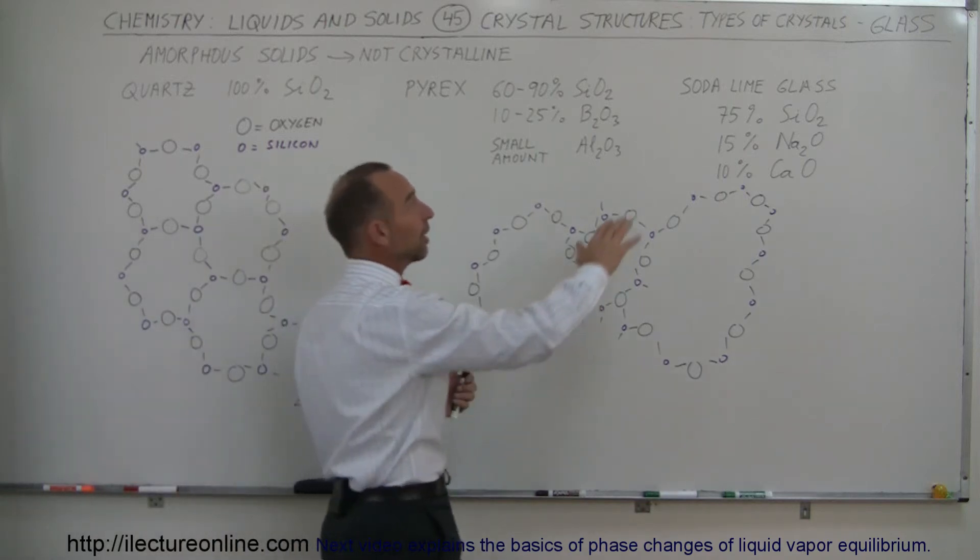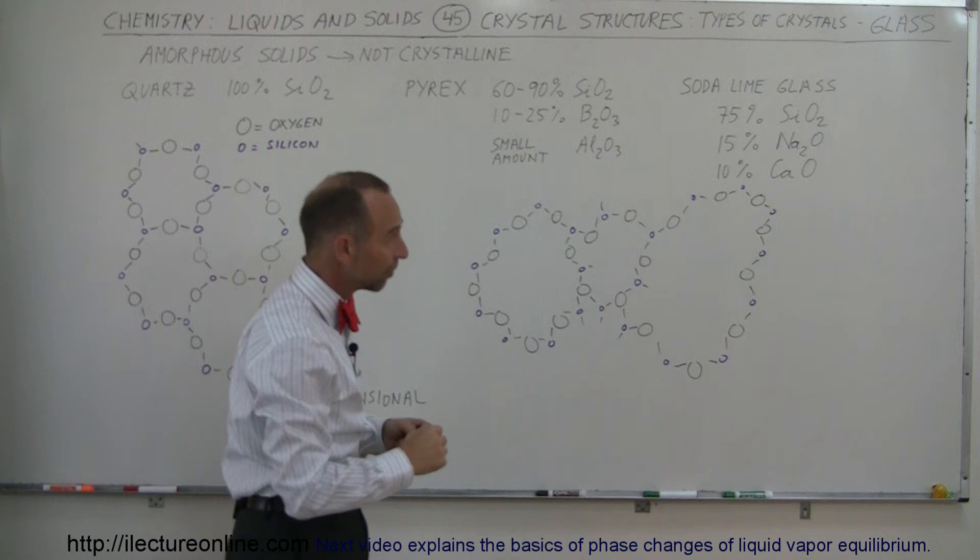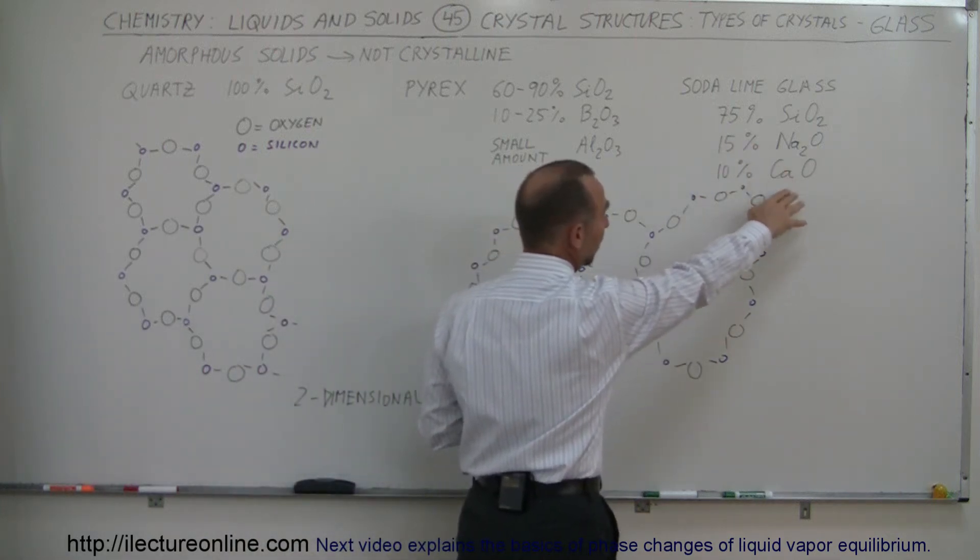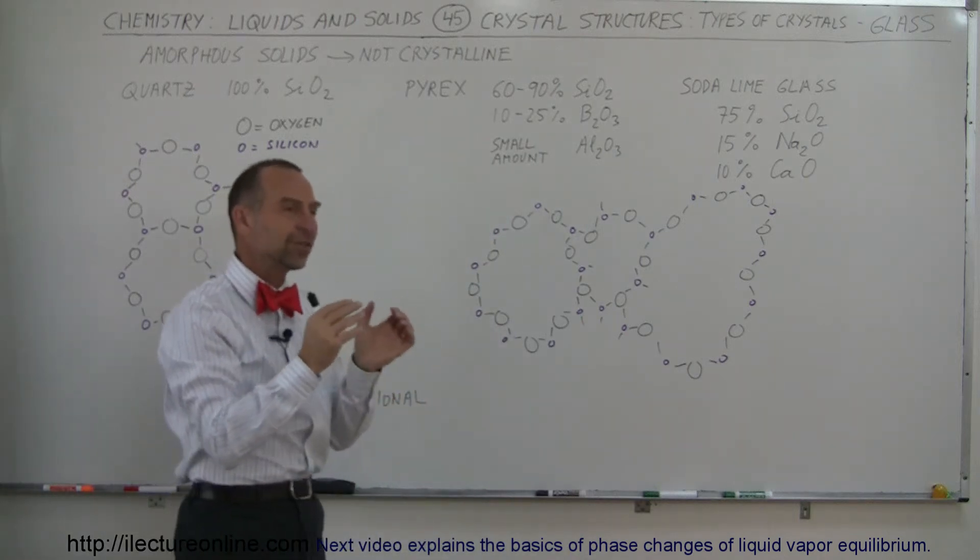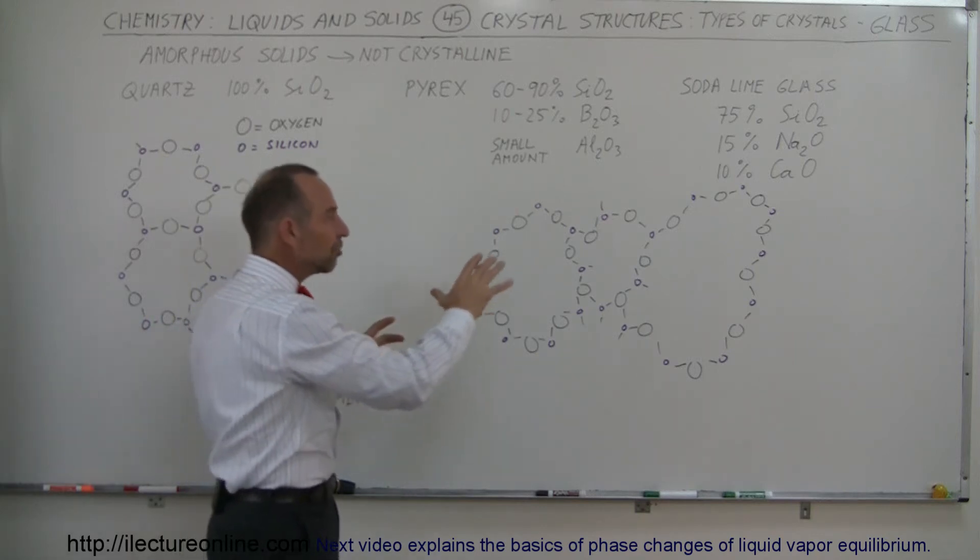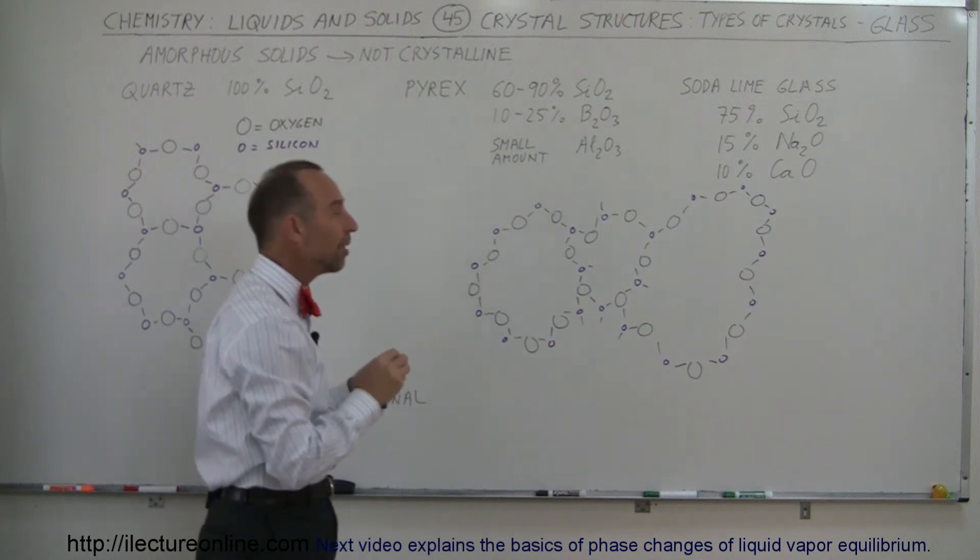especially when you go to something like sodaline glass, which is a basic constituent for windows and bottles. You can see that when you use different substances like sodium oxide and calcium oxide, you get something where the glass is not crystalline, and over time, with enough pressure, you can actually change the internal structure of the atoms.